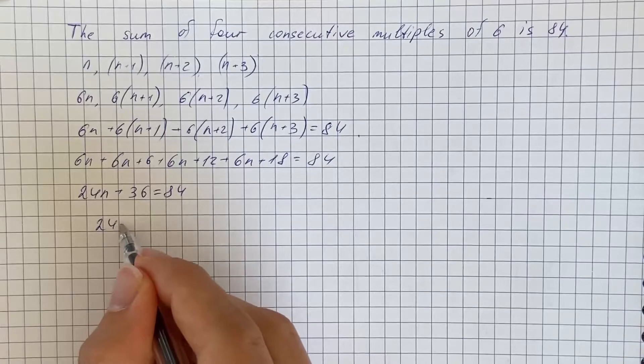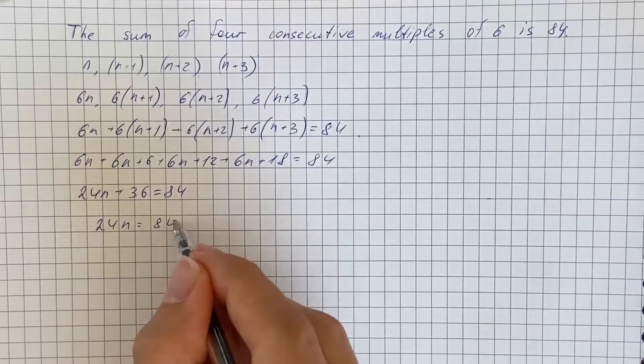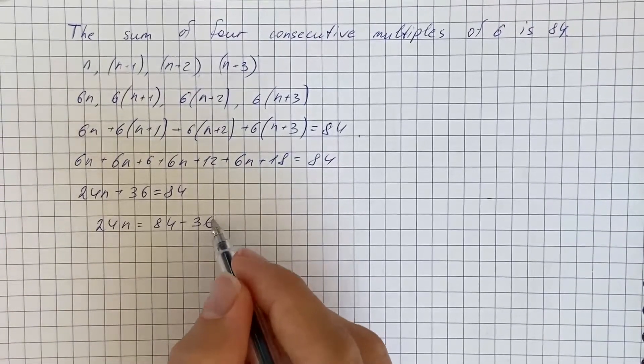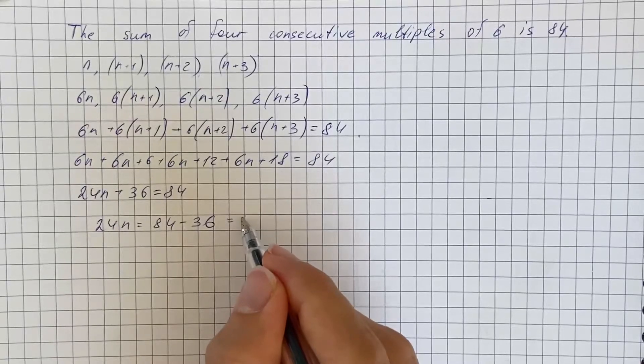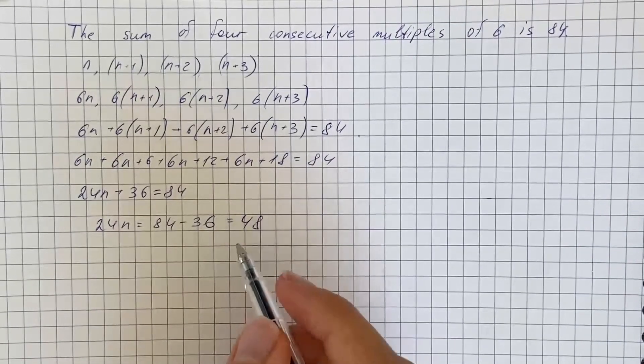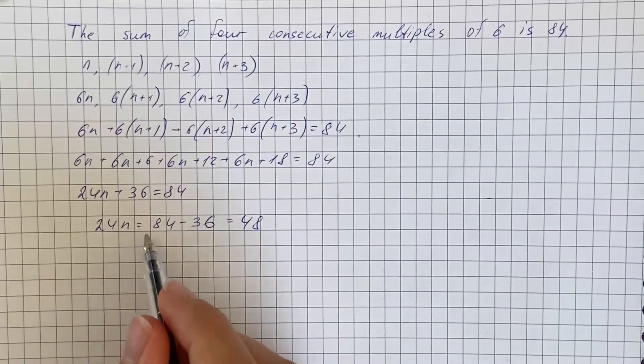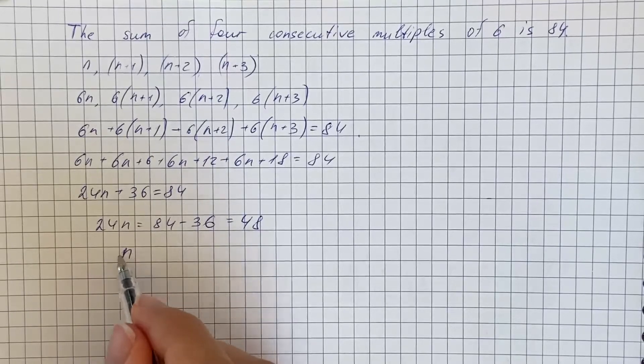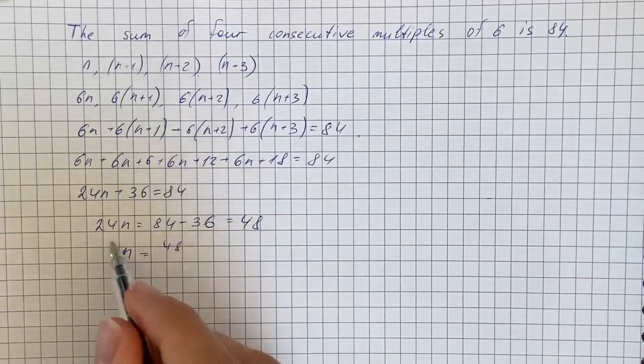24n equals 84 minus 36, which is going to be 48. So we divide 48 by 24, and we get n equals 2.